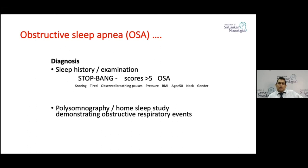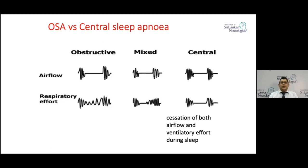If the STOP-BANG score is more than five, that indicates a high likelihood that the patient is suffering from obstructive sleep apnea. You then need to organize a polysomnography or home sleep study to demonstrate obstructive respiratory events. Central sleep apnea, by contrast, involves a pause or cessation of both airflow and ventilatory effort during sleep, as opposed to obstructive sleep apnea.